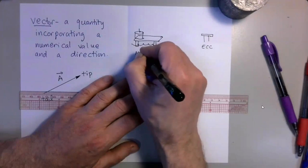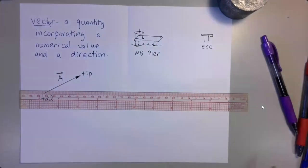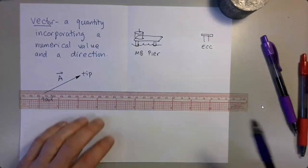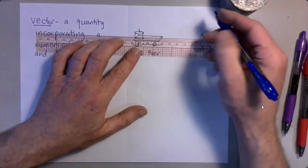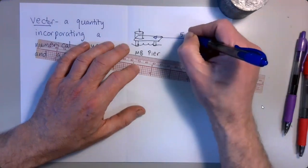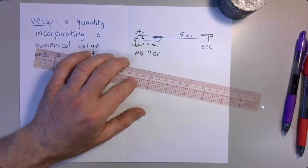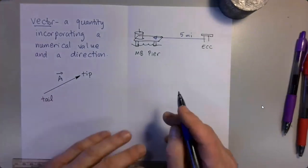It's the Manhattan Beach Pier. If someone asks you how to get from El Camino College to the Manhattan Beach Pier, what might you tell them? You might tell them to get on Manhattan Beach Boulevard and drive about five miles to the west. This is an example of what we call a displacement vector.